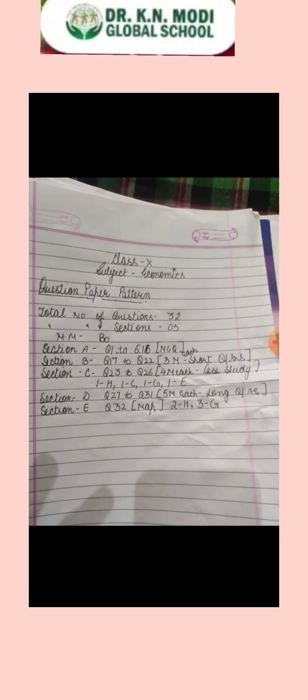Section D covers question numbers 27 to 31, which are of 5 marks each — these are long question answers requiring detailed explanation. The last section is the map, which is also worth 5 marks: 2 marks for History and 3 marks for Geography. In PT1, PT2, or half-yearly exams, the map pattern may vary by school and teacher, but in the board exam, it is fixed as 2 marks History and 3 marks Geography.